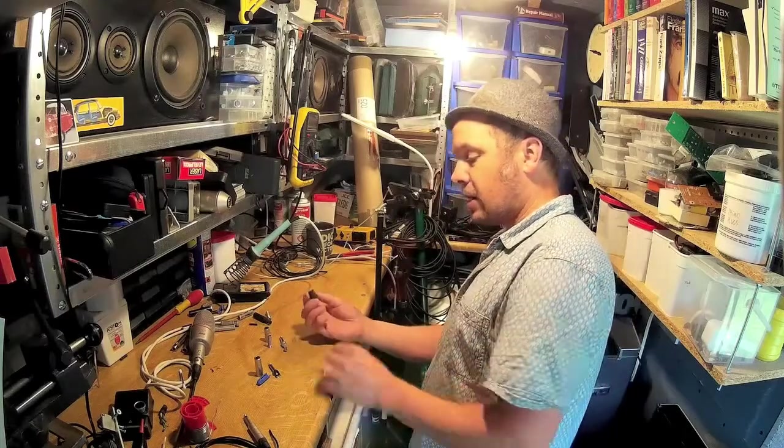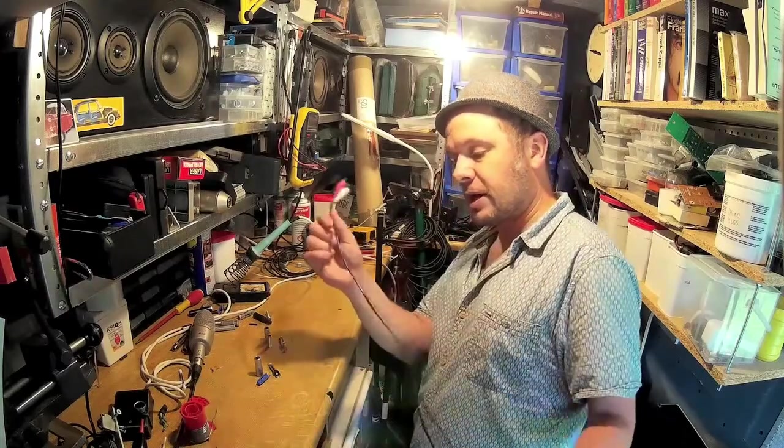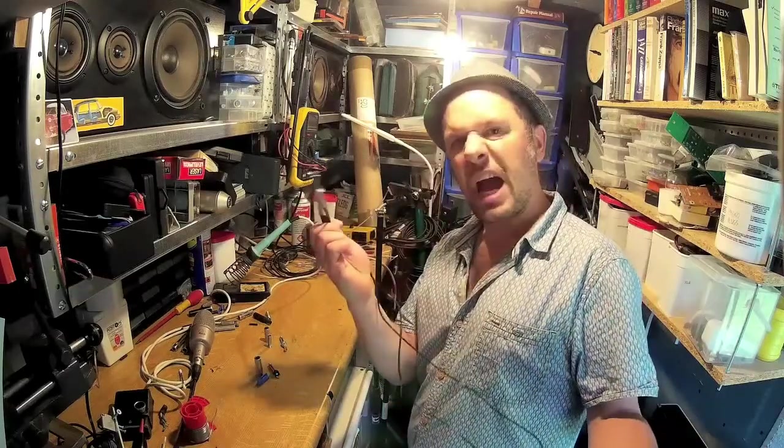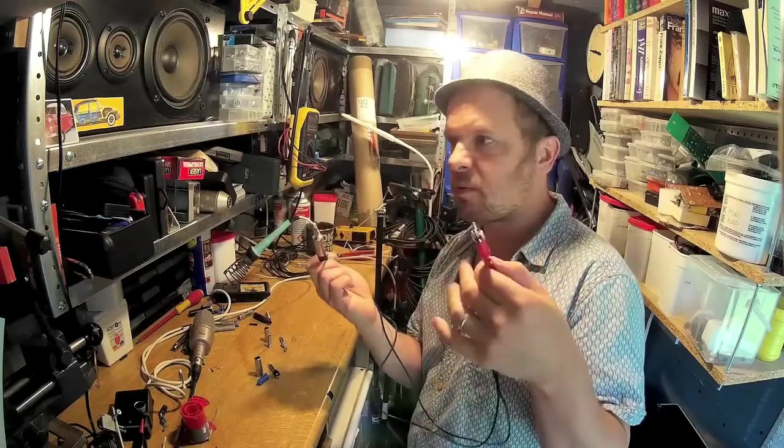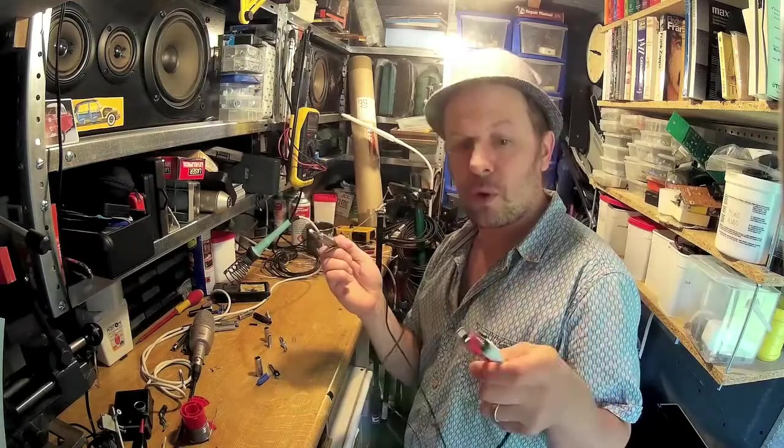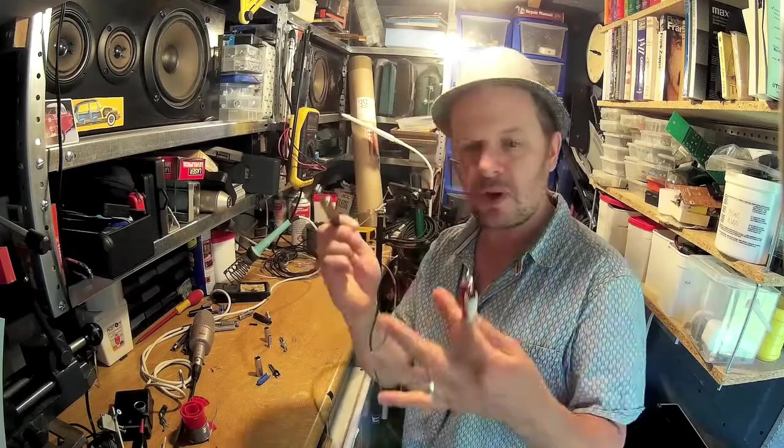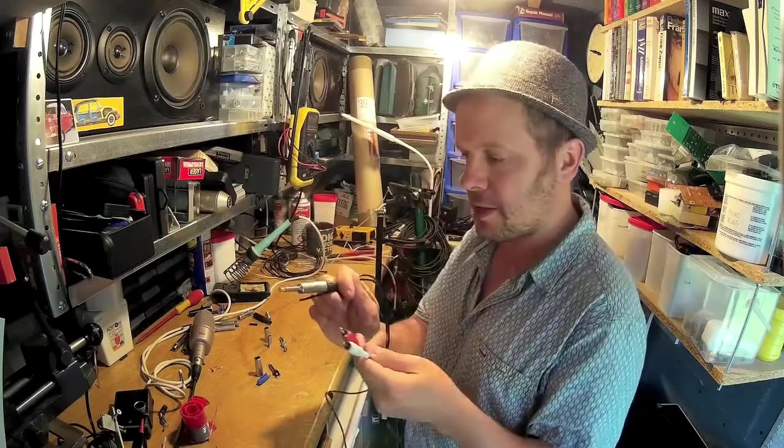Now I've made up a lead that goes from two phonos here to two jack plugs. Useful if you want to connect a CD player or cassette recorder, showing the age, up to a PA system and the PA system only has jack input. So you can just make up something like this.